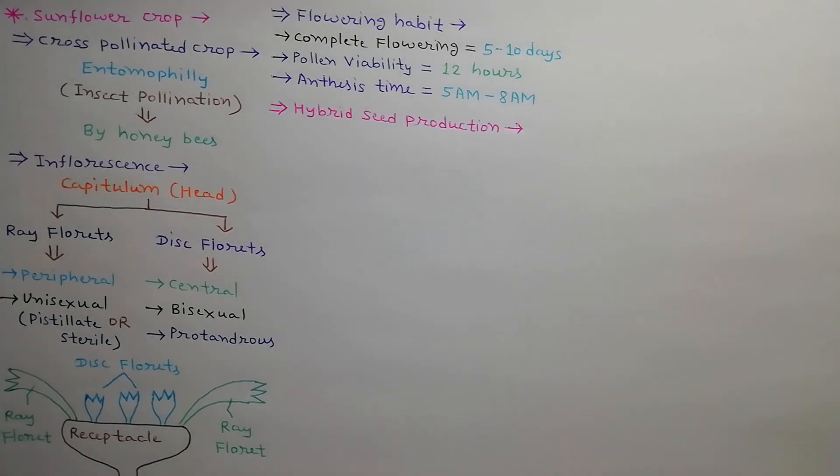We will discuss hybrid seed production in sunflower crop. In sunflower, cytoplasmic genetic male sterility is used for hybrid seed production. It means a three-line system is used.